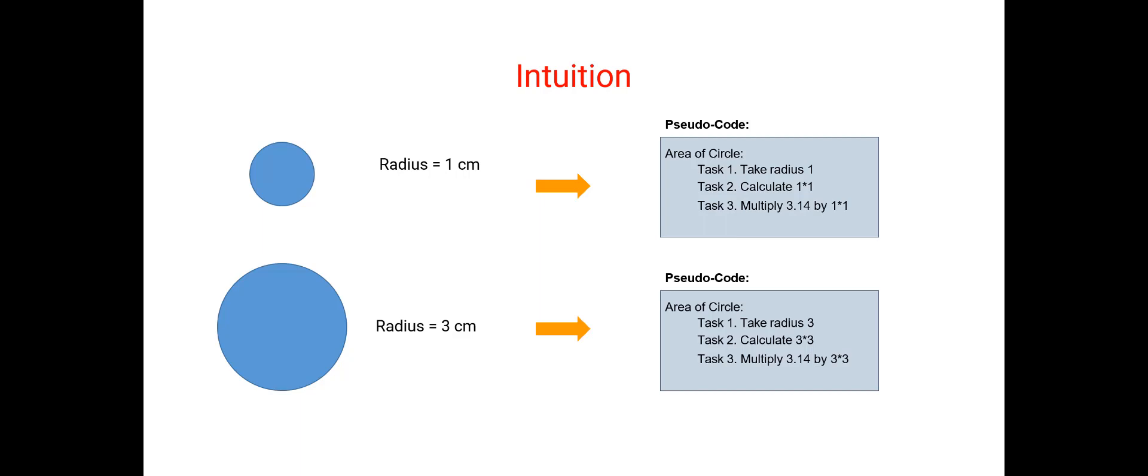In that case you don't have to do anything, you can just write another pseudocode. In this case you can take the radius 3, find the square of 3, multiply the square of 3 with 3.14 and you get the area.